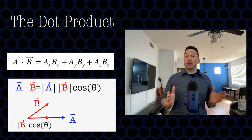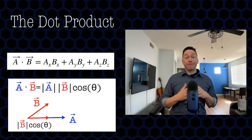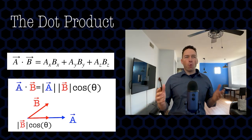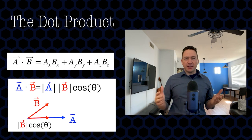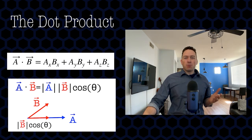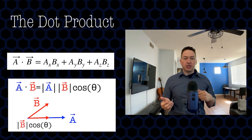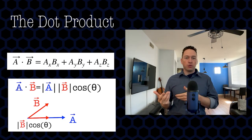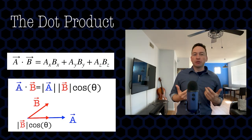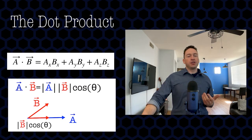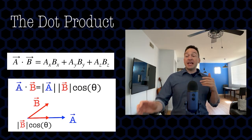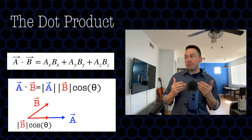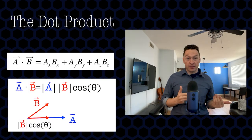So let's actually address that now. Now that we understand the physical meaning of the dot product, you might be wondering: what does that physical meaning have to do with this simple procedure of multiplying the two x components, then adding that to multiplying the two y components, then adding that to multiplying the two z components? How is that the same as taking a first vector and multiplying it by the component of a second vector which is parallel to that first vector?